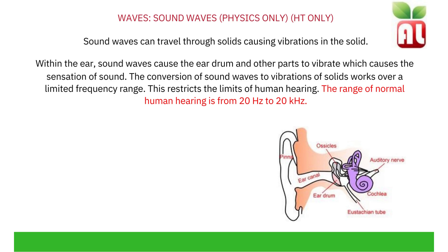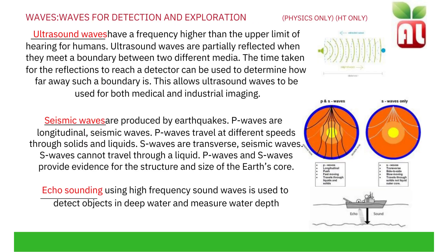Sound above 20 kilohertz is known as ultrasound. Ultrasound waves have a higher frequency than the upper limit of hearing for humans. Ultrasound waves are partially reflected when they meet a boundary between two different media. The time taken for the reflections to reach a detector can be used to determine how far away the boundary is by using a speed-distance-time equation. Note that the time measured is the total time for the wave to travel there and back, so you divide by two. This allows ultrasound waves to be used for both medical and industrial imaging.